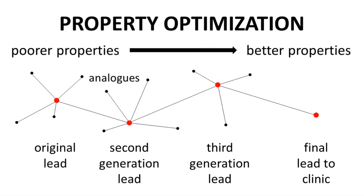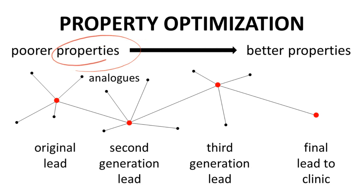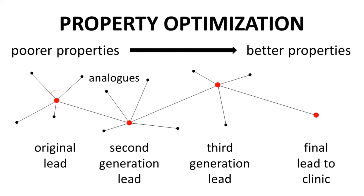Let's very simply represent the lead optimization process, which is the improvement of properties within lead compounds. Leads are evaluated based on their properties. The term properties is very general and covers potency, efficacy, pharmacokinetics, and safety. The original lead advanced from the pool of hits is shown here as a single compound — a big red dot.